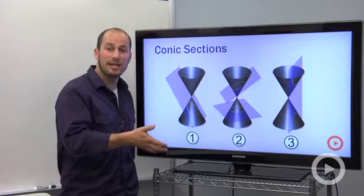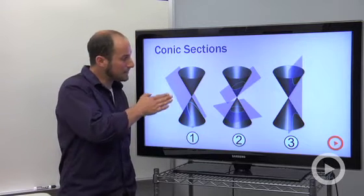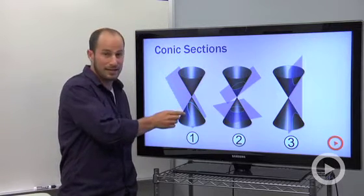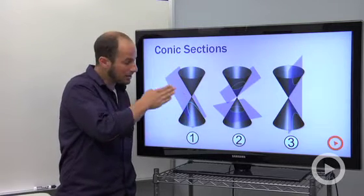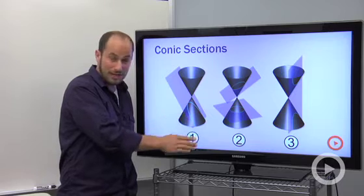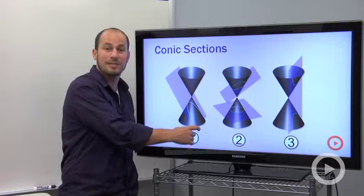The first one we've actually talked about is a parabola. What happens is if you have these two cones lying on top of each other, and you take a plane that is parallel to the edge of the cone, you end up getting a cross-section and that cross-section is a parabola.